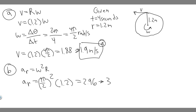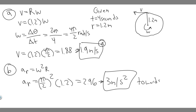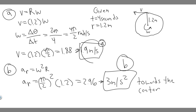The units: meters divided by seconds squared, since radians are dimensionless and we squared the seconds — just like normal acceleration. So the answer is 3 meters per second squared, directed towards the center, because it's centripetal acceleration. So 3 m/s² toward the center is the answer to part B, and 1.9 m/s is the answer to part A. Hopefully you found this useful.